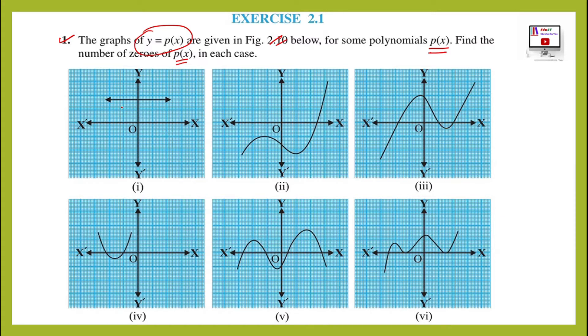You will see, this is a graph of y equals p(x). There are 6 graphs. If we find the number of zeros, we can find the number of zeros. We have to see that the graph of polynomial x-axis is how many points intersecting points.